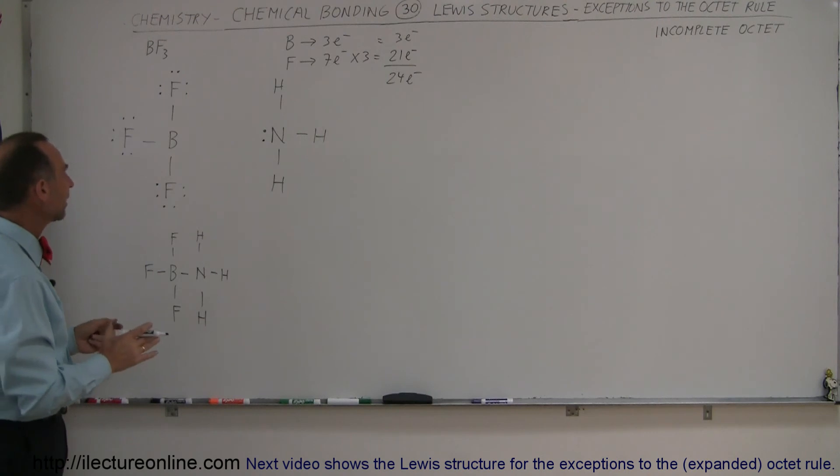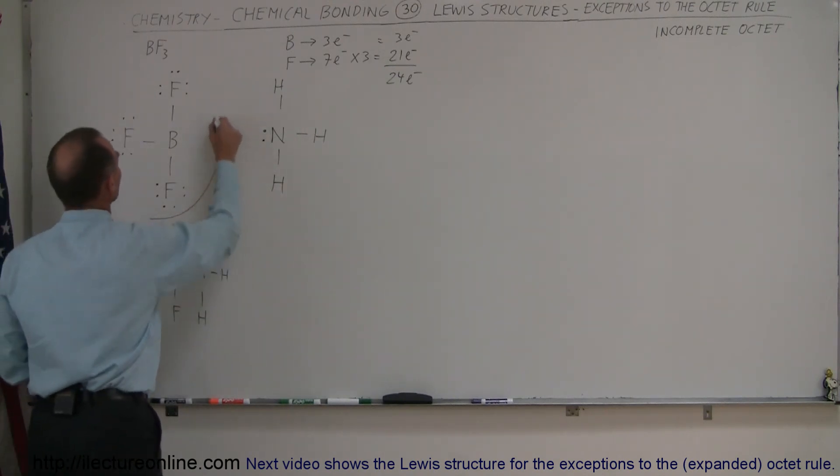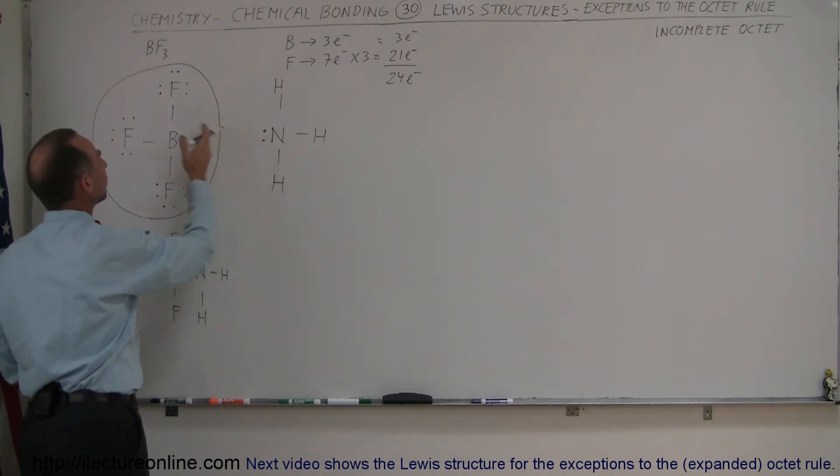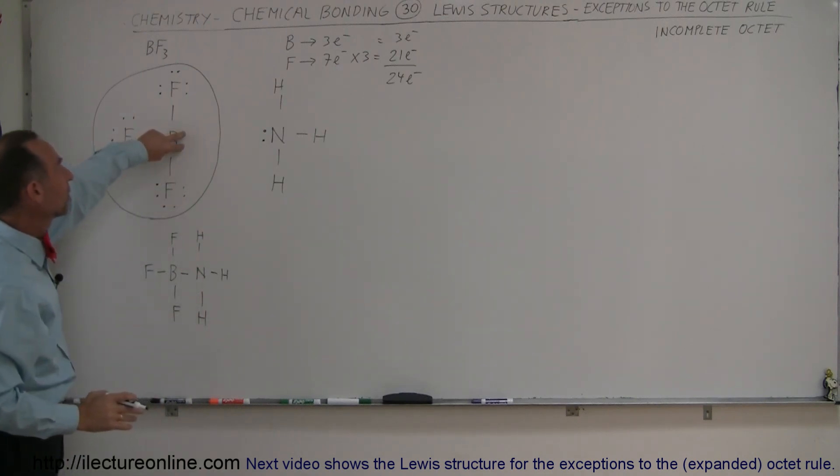Now you can see that it will lend itself to bonding with something like ammonia, and it forms a stable molecule like that. But this molecule by itself is totally happy. It doesn't have to make the bond. It just makes it possible to make an additional bond because these two valence electrons are not there.